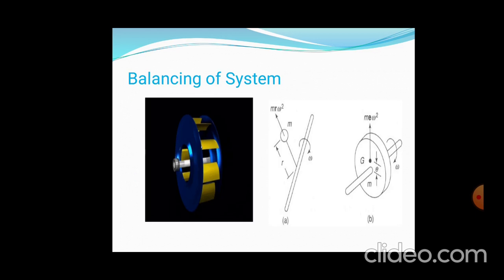This shows a shaft and some mechanism attached to it for rotating purposes. With mass M, the centrifugal force acting on the shaft is M·ω²·r, where omega is the rotation of your shaft and R is the radius. If there is a difference between the center of gravity and the center of rotation, unbalanced forces are acting on it.